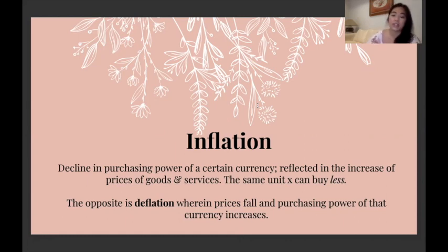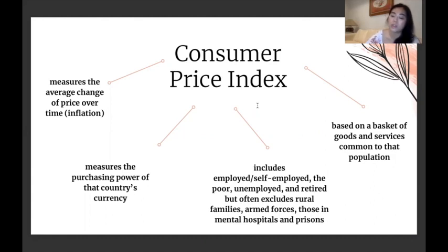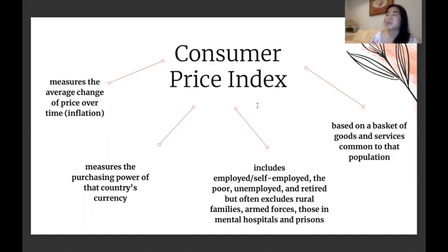The opposite of inflation is deflation, where prices fall and purchasing power of that currency increases. The CPI, or Consumer Price Index, is just the measure of the average change of price over time — a measure of inflation that also measures the purchasing power of the country's currency. It includes people who are employed, self-employed, the poor, unemployed, and retired, but often excludes rural families, armed forces, and those in institutions. It's based on a basket of goods and services common to that population — standard costs like food and housing — and varies from country to country.